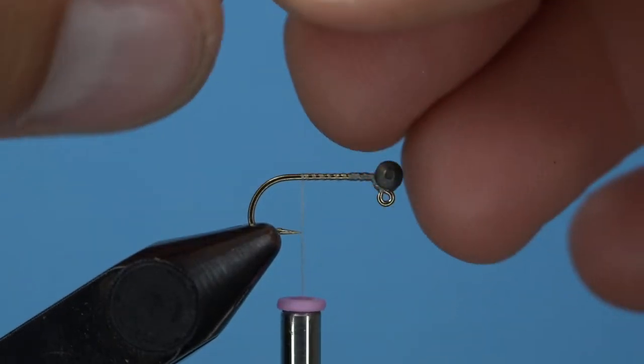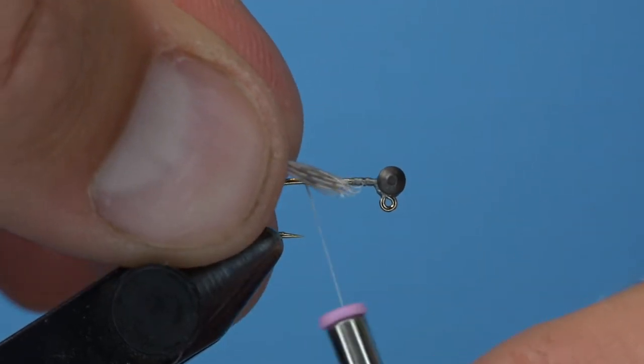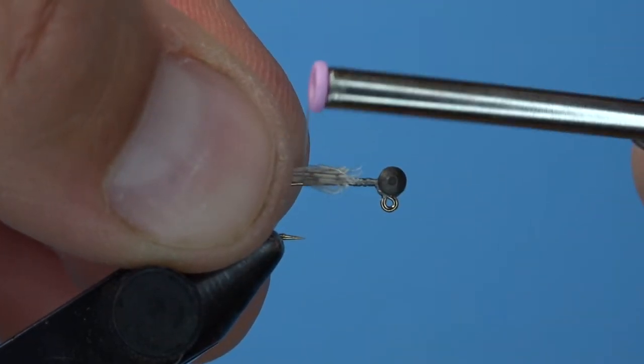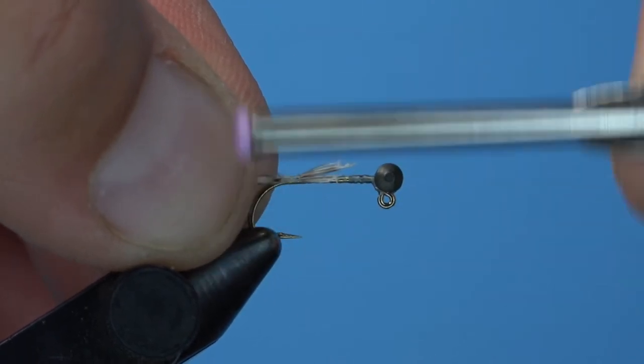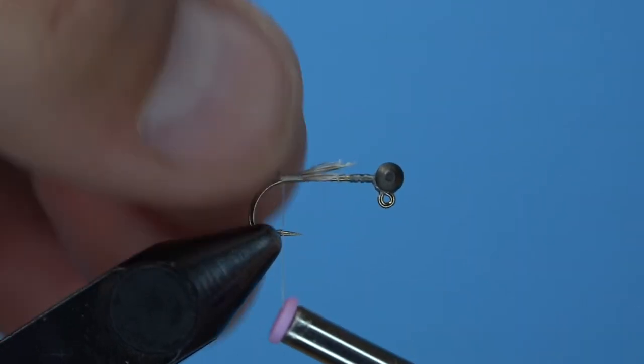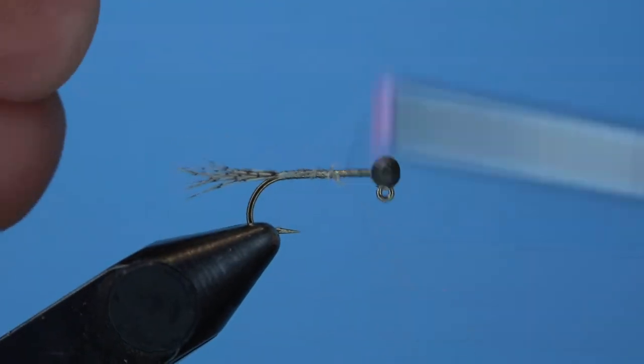I like a short tail on my silver foxes. Capture the partridge fibers with a pinch wrap and then check that tail for length. If you're content with your eyeball measurement, secure the butt-ends to the hook shank.